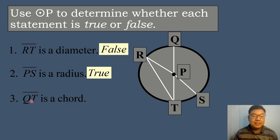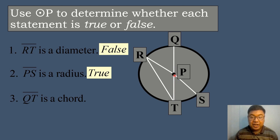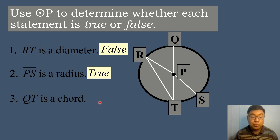Number 3: segment QT is a chord. Segment QT is actually a diameter because it passes through the center of the circle. Since the diameter is also known as the longest chord on the circle, therefore the answer for number 3 is true.